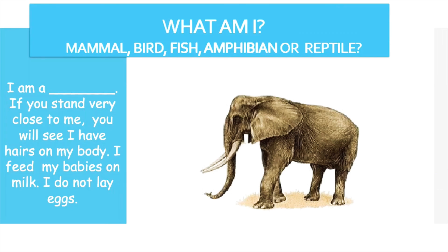Can you guess which animal this is? Yes, it is an elephant. If you stand very close to an elephant, you will see it has hairs on its body. It feeds its babies on milk and does not lay eggs — so an elephant is a mammal.